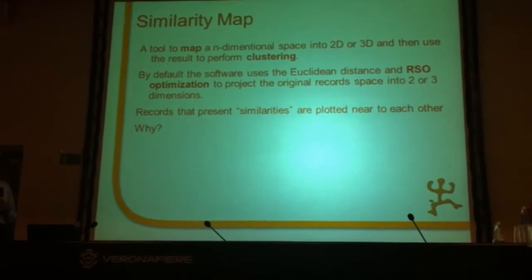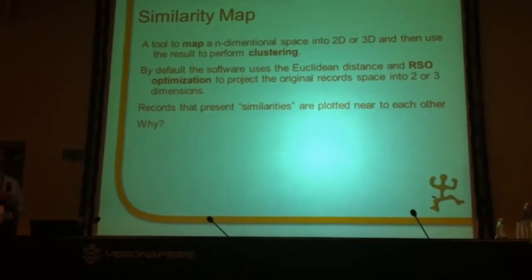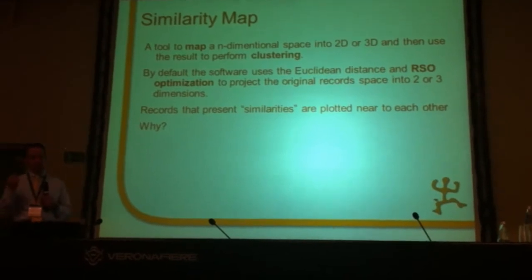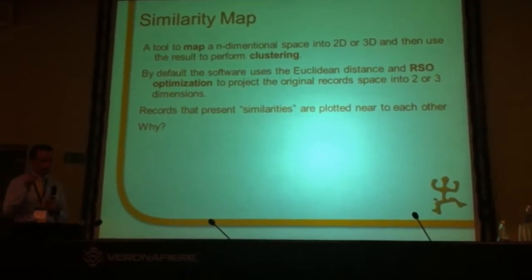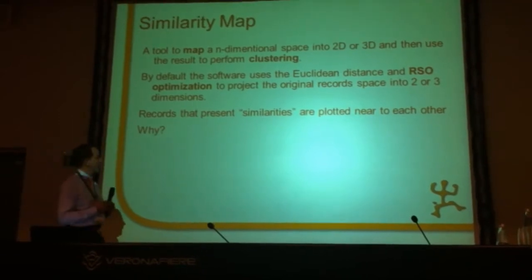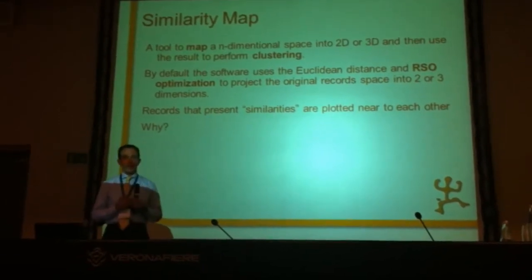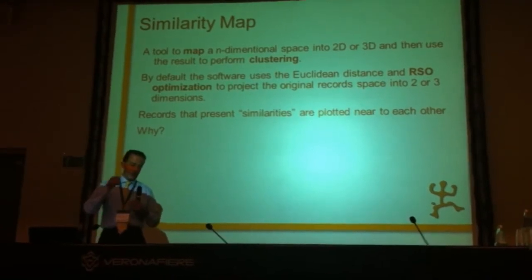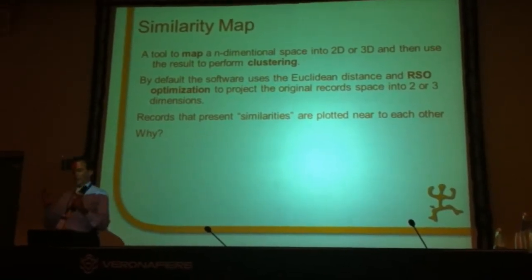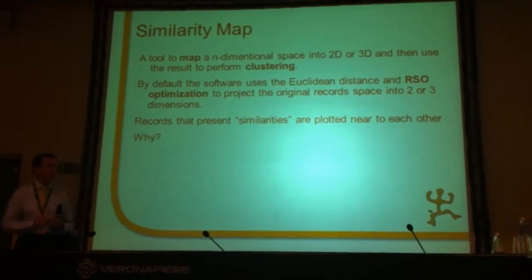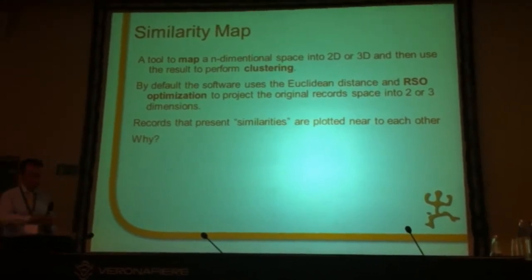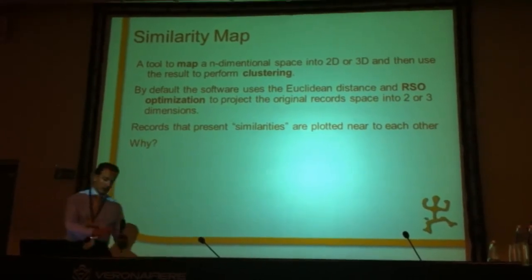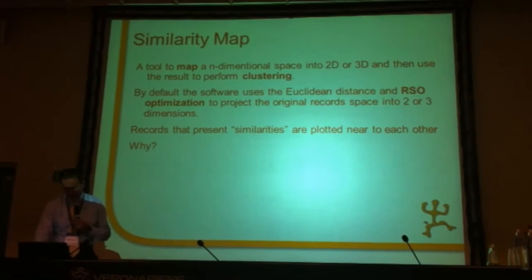Why is this useful? Because our brain is also 2 or maximum 3 dimensional. Closeness in space is typically related in our brain to closeness in concepts. This is why it is useful to map similar things together in space. Think about organizing items on a desk — you naturally try to put similar things together. It's very natural, very human.